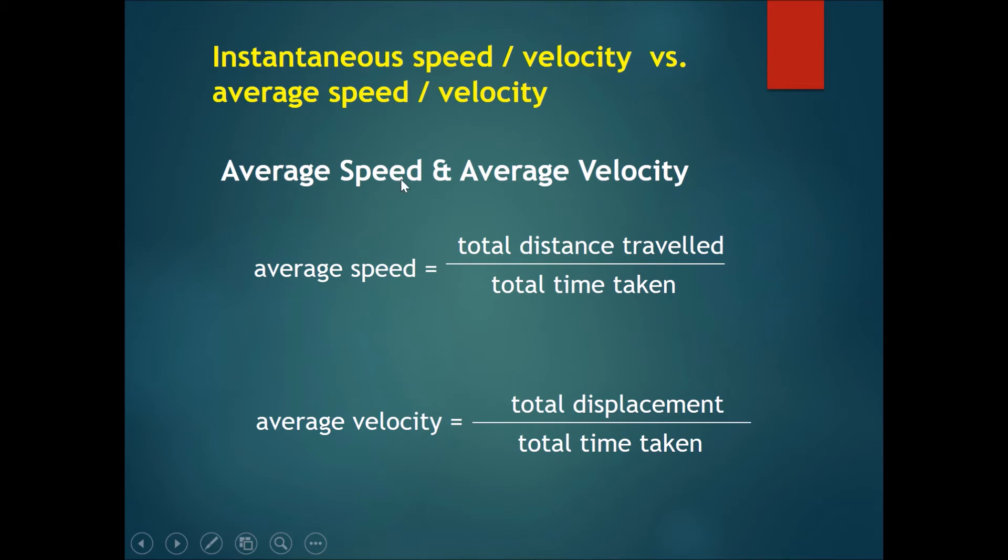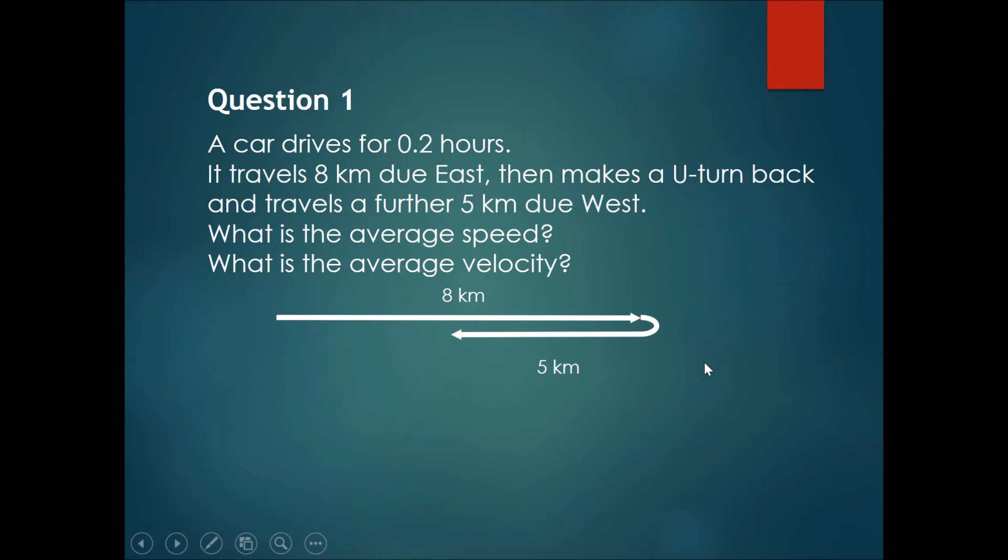This is compared to the average speed. The average speed would mean the total distance traveled divided by the total time taken, and the average velocity will be the total displacement divided by the total time taken. Let's try out some questions.